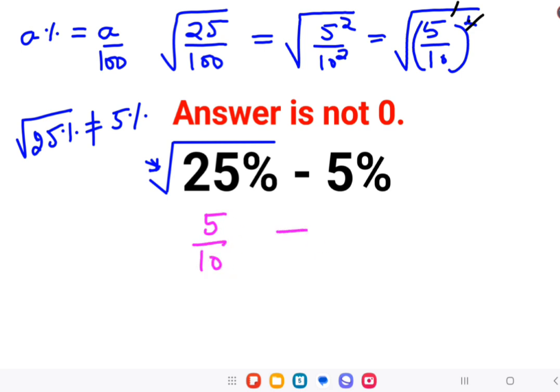And as we know, this is not under a root. So we'll follow this logic, which is 5 upon 100.